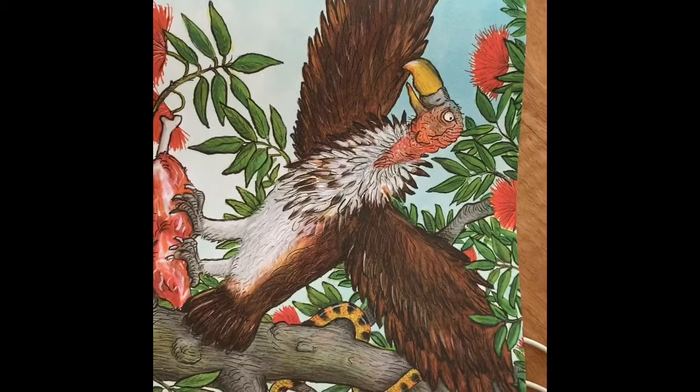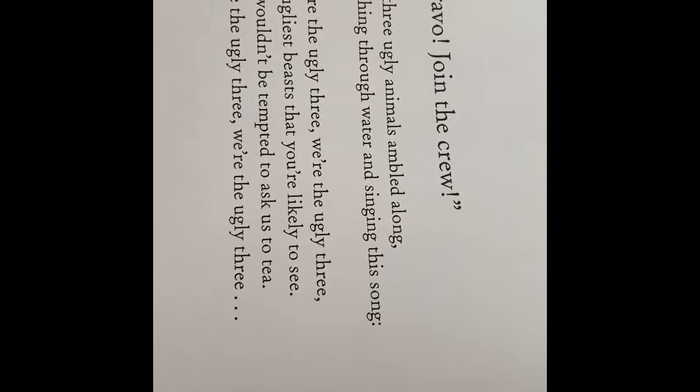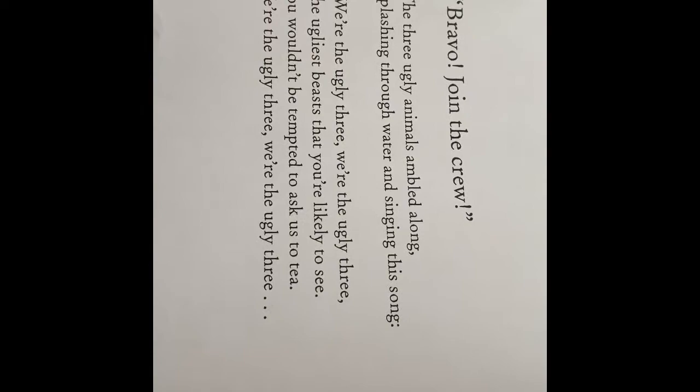Then the other two shouted, 'Bravo, join the crew!' The three ugly animals ambled along, splashing through water and singing this song: 'We're the ugly three, we're the ugly three — the ugliest beasts that you're likely to see. You wouldn't be tempted to ask us for tea — we're the ugly three!'